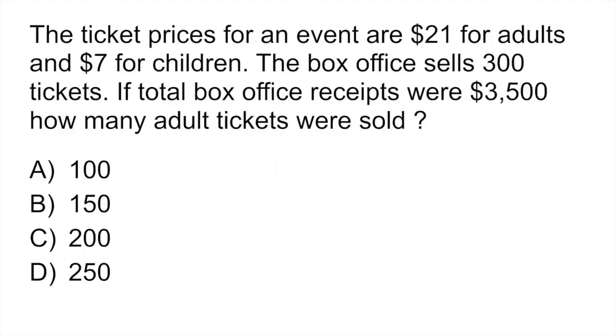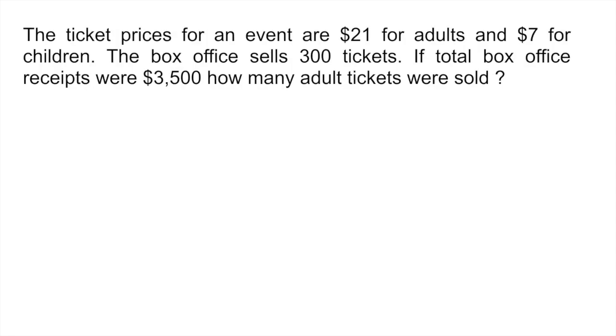Question 4 is another algebra problem. The ticket prices for an event are $21 for adults and $7 for children. The box office sells 300 tickets. If the total box office receipts were $3,500, how many adult tickets were sold? The wording makes it a little tricky so let's take it step by step. We basically have no idea how many tickets we sold for adults or children. So we're going to say the number of adult tickets is x.